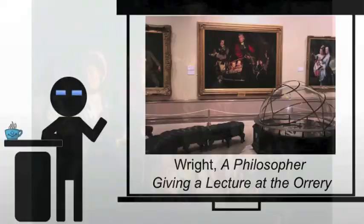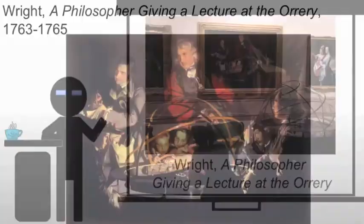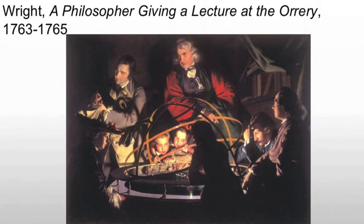The piece we're looking at is 'A Philosopher Giving a Lecture at the Orrery.' What we have in the piece is a single candle which lights the entire work, the candle in this case representing the sun in the orrery, which is a model of the solar system.